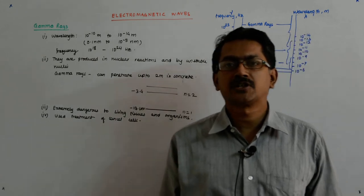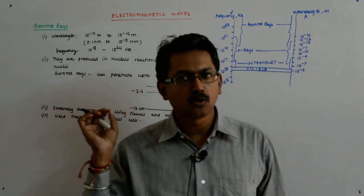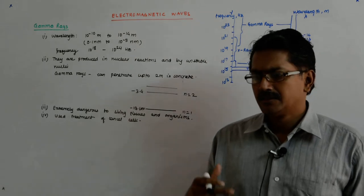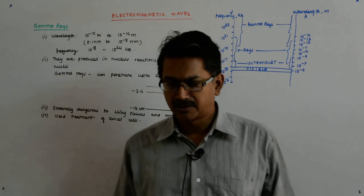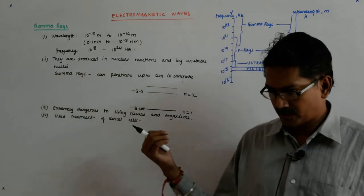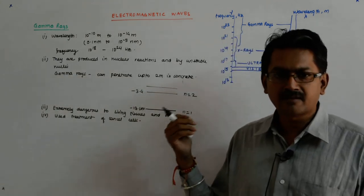So, for example, tobacco chewing, if that has led to some localized form of cancer, there you can bombard it. Say for example, in blood cancer, where the whole thing is moving, you cannot use this. So, this is called radiation therapy.